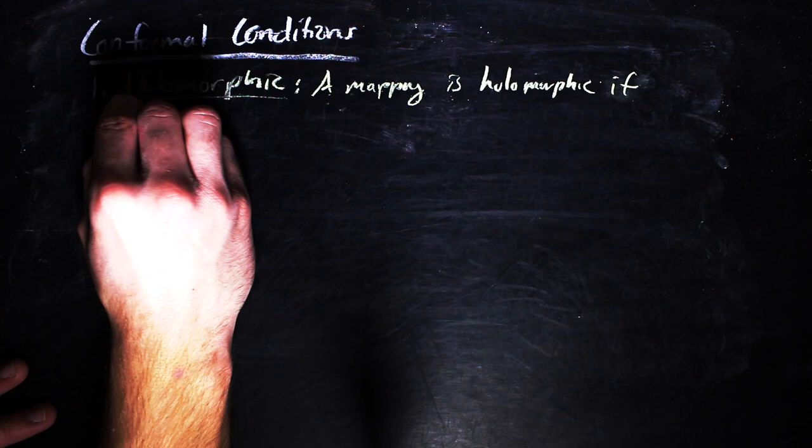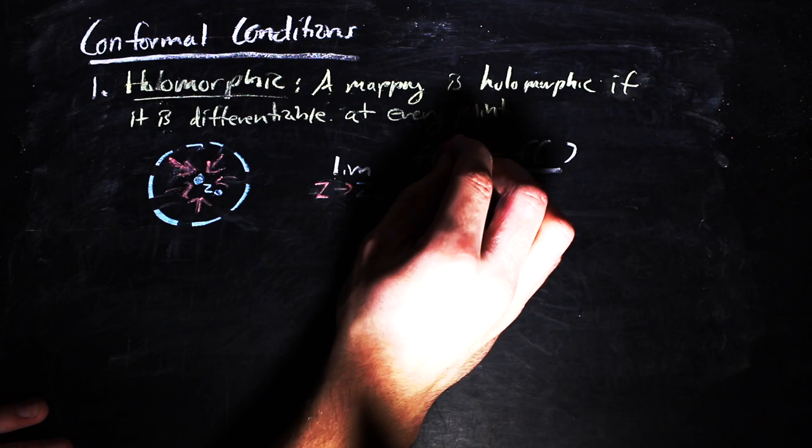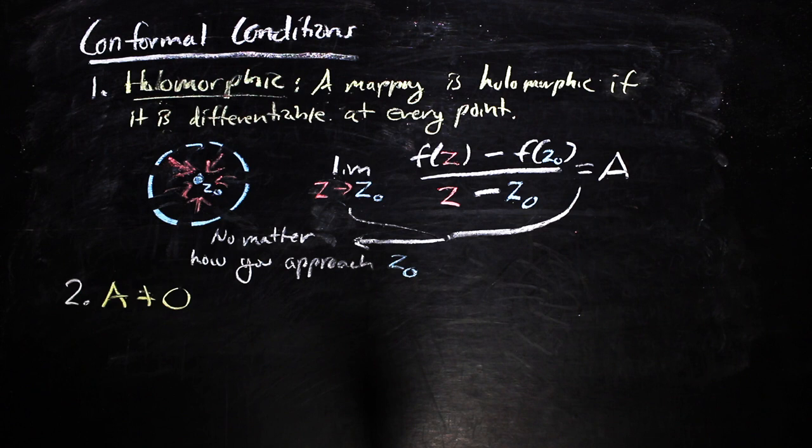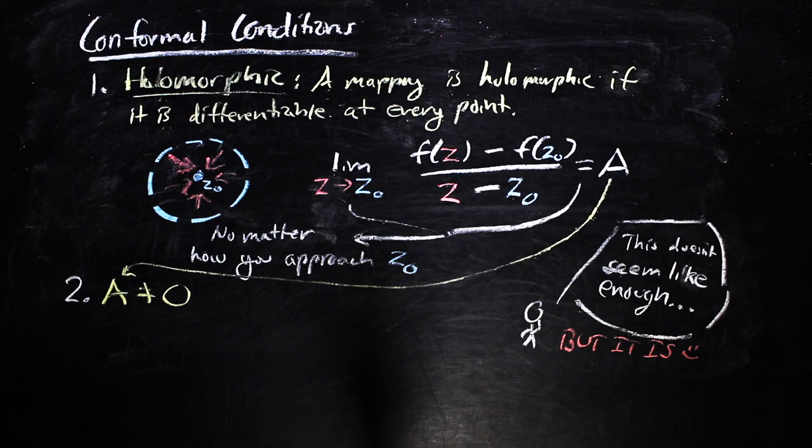There are two conditions. One, the function needs to be holomorphic. This just means that how the function changes about a point is the same no matter which direction you approach that point from. In terms of a bit of calculus of a complex variable, the derivative of the function, defined as so, needs to exist no matter how z0 is approached, and it needs to hold the same value. The second condition is that f must have a non-zero derivative everywhere. These conditions don't seem like much, but in a way, that's what makes complex analysis so cool, is that you can get very strong results without much information.